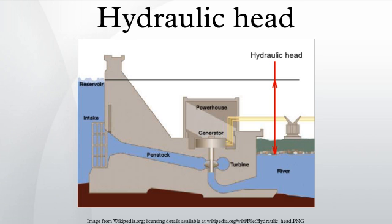The static head of a pump is the maximum height it can deliver. The capability of the pump at a certain RPM can be read from its QH curve. Head is equal to the fluid's energy per unit weight. Head is useful in specifying centrifugal pumps because their pumping characteristics tend to be independent of the fluid's density. There are four types of head used to calculate the total head in and out of the pump.